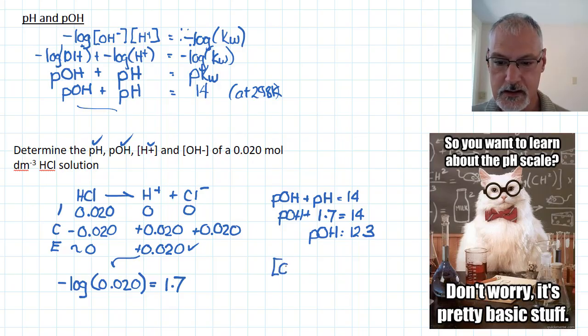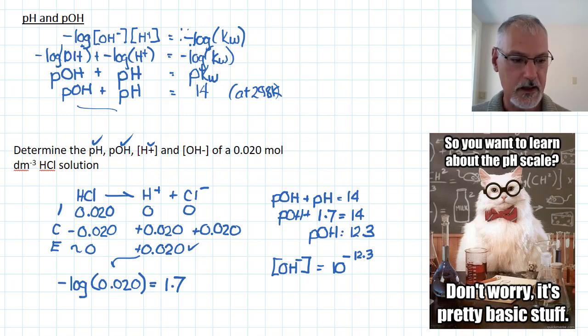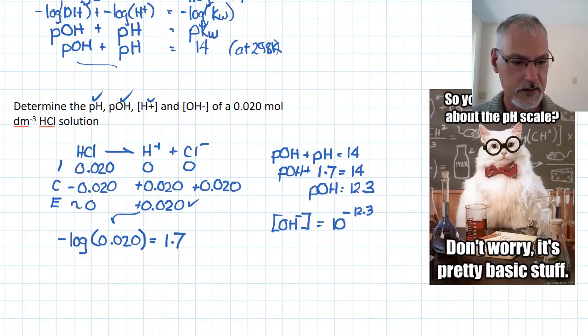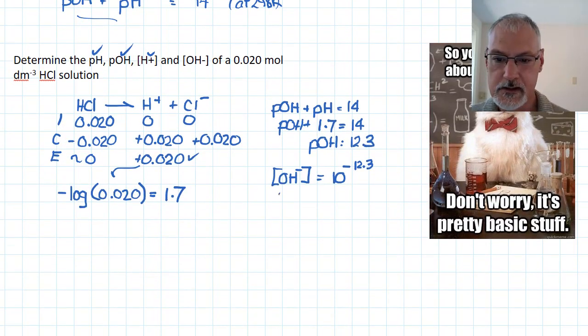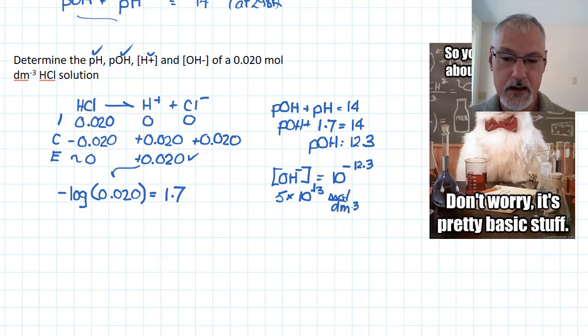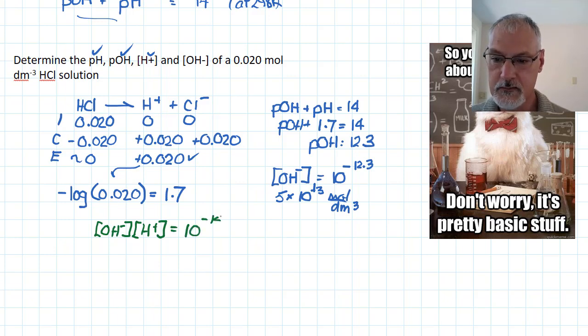And finally then, the concentration of the OH- ion would be 10 to the negative 12.3. And we can then take that value and turn that into a more recognizable number. That would be the same as roughly 5 times 10 to the negative 13 moles per decimeter cubed. Now a special note is I could have also arrived at the answer using this relationship, OH- times H+ equaling 10 to the negative 14. So I could have brought that down and substituted it in here and I would have arrived at exactly the same answer just via an alternative route.